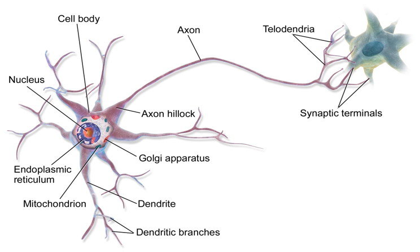Stimuli cause specific ion channels within the cell membrane to open, leading to a flow of ions through the cell membrane, changing the membrane potential. Neurons must maintain the specific electrical properties that define their neuron type. Thin neurons and axons require less metabolic expense to produce and carry action potentials, but thicker axons convey impulses more rapidly. To minimize metabolic expense while maintaining rapid conduction, many neurons have insulating sheaths of myelin around their axons. The sheaths are formed by glial cells — oligodendrocytes in the central nervous system and Schwann cells in the peripheral nervous system. The sheath enables action potentials to travel faster than in unmyelinated axons of the same diameter, whilst using less energy.